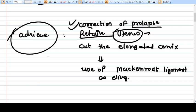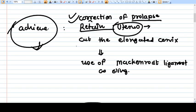Then we should go for this Fothergill's repair or Manchester operation. Why are we making this statement that we don't want to preserve the reproduction function? Because in this surgery we cut the elongated cervix.